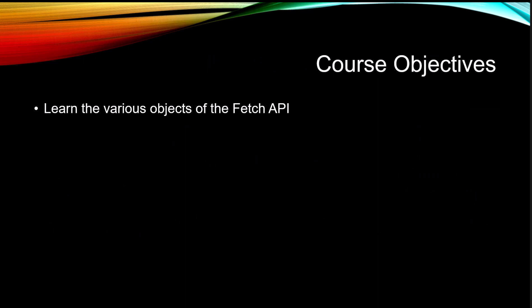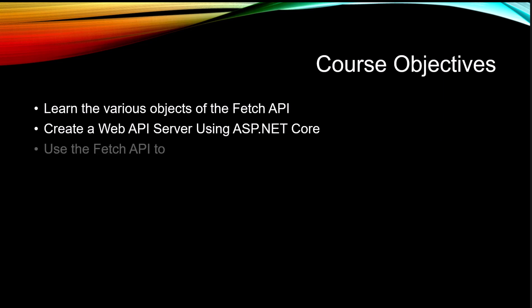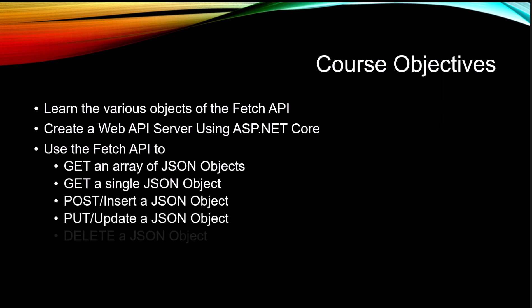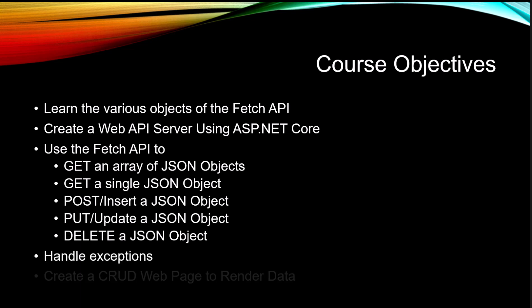The objectives for this course are to learn the various objects of the Fetch API. You're going to create a web API server using ASP.NET Core. Then we're going to use that Fetch API to get an array of JSON objects, get a single JSON object, post or insert a JSON object, put or update, and do a delete. We're also going to learn how to handle exceptions.